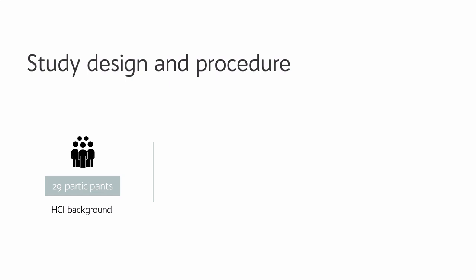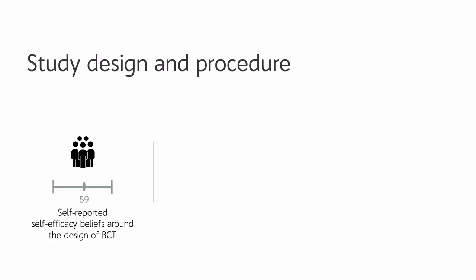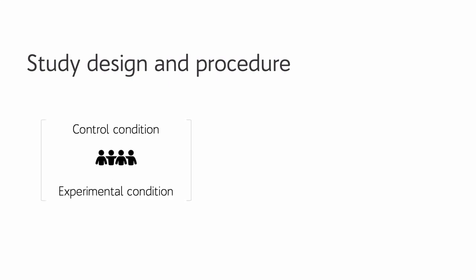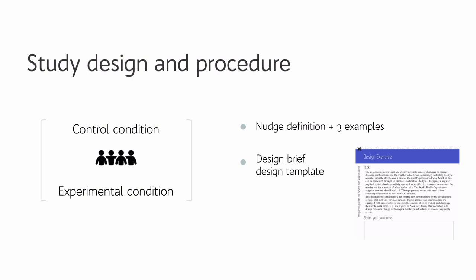To address these questions, we recruited 29 participants, all with an ACI background. Most participants reported having prior experience with behavior change theories. We implemented a between-subject design, where half of the participants were assigned to the control condition without the cards, while the other half was assigned to the experimental condition. Participants were introduced to the definition of nudging along with three examples of technology-mediating nudges. Participants were provided with a design brief, asked to sketch out their idea, and instructed to include a description on their sketches. In the experimental condition, participants were asked to explore their cards until finding a card or combination they might want to use.